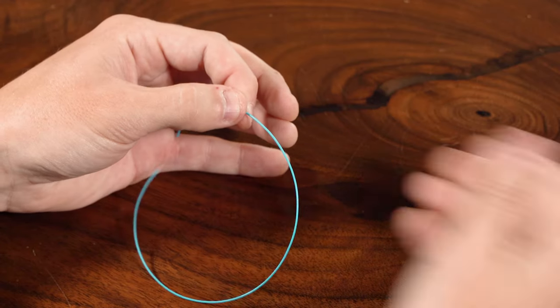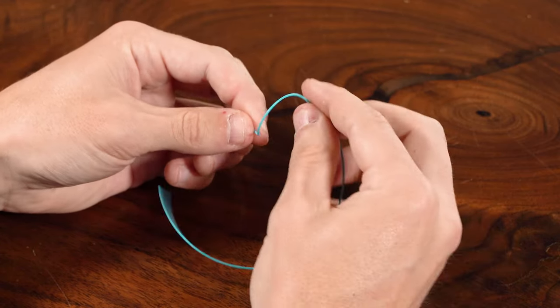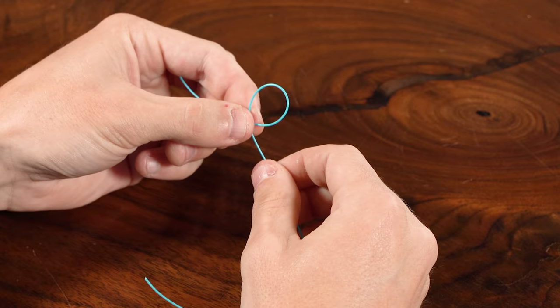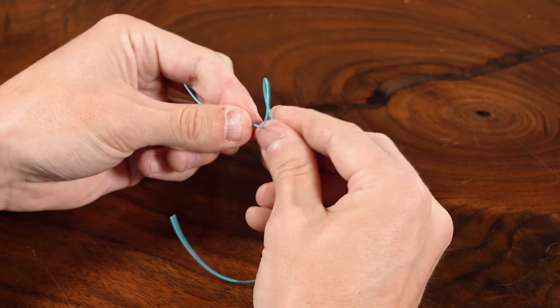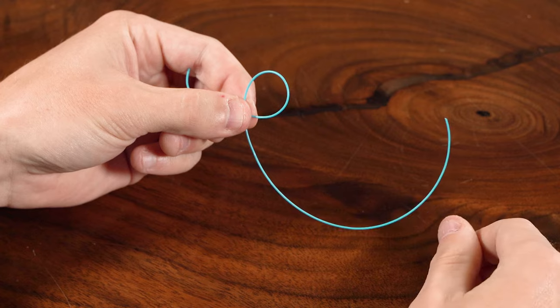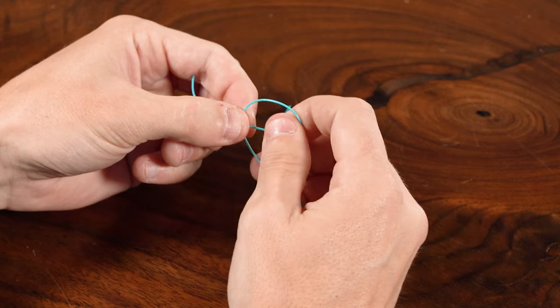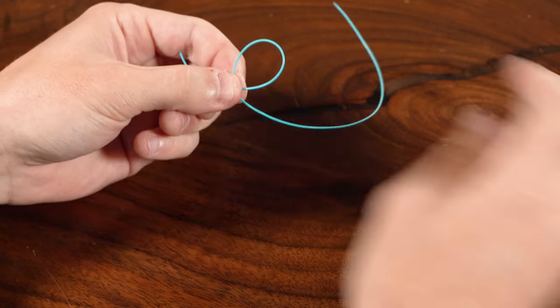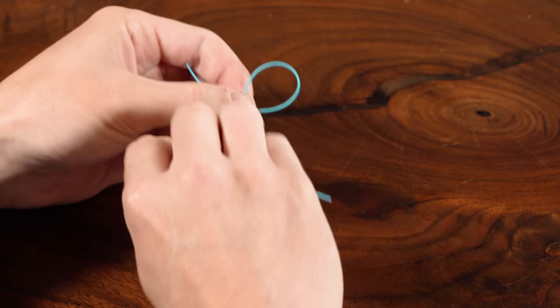I'm going to start with that leader material in my left hand and create an overhand knot with the running line behind. Go ahead and pinch that in my forefinger and thumb in my left hand, and then I'm going to take the running line, this piece right here, and wrap it around.